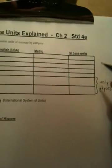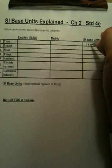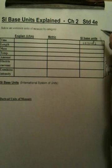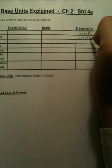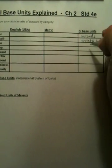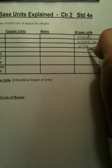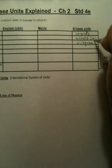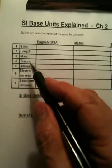The base units you'll be using throughout the course include seconds, which don't need much explanation. Meters are for length and are abbreviated with an M. Then we have kilograms, which are a measure of mass, abbreviated as kg. This whole chart is filled in for you on a handout that you received on the first day of class.